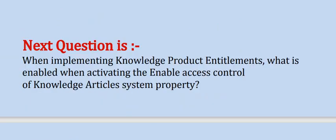The correct options are Option C and D. Next question: When implementing knowledge product entitlements, what is enabled when activating the 'enable access control of knowledge articles' system property?